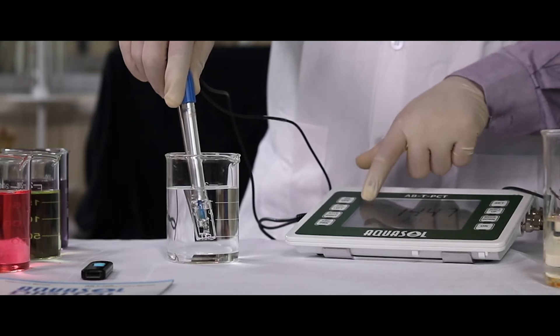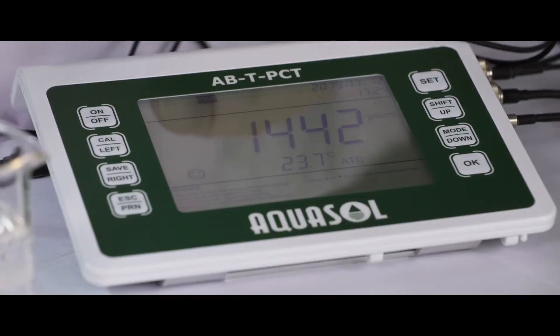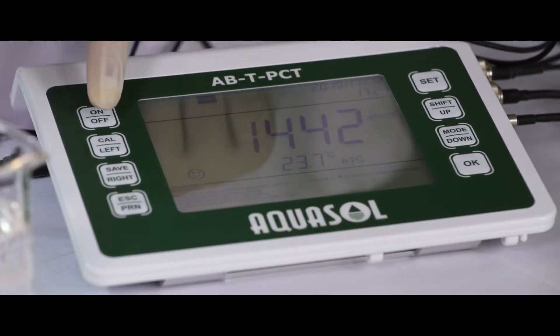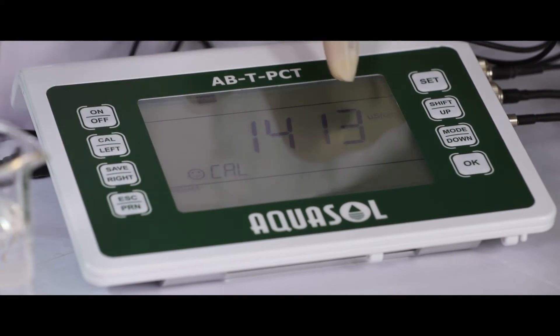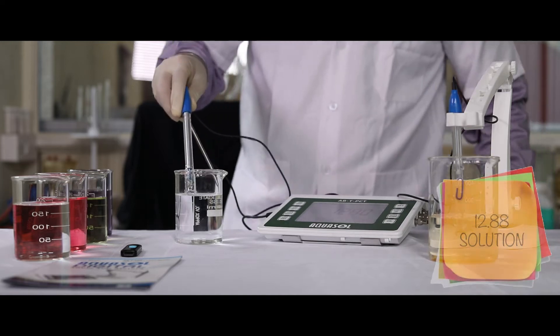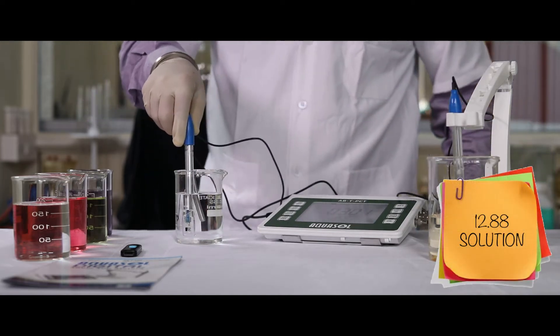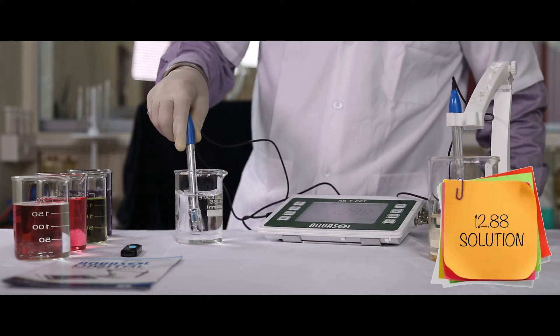Once the reading is stable, a smiley emoji will appear on the display. Press CAL key to start calibration and then press OK to calibrate. Repeat the same procedure for 12.88 buffer solution and then press OK.